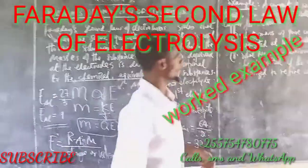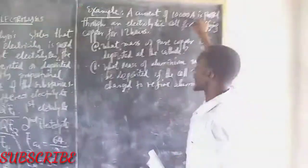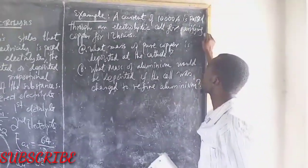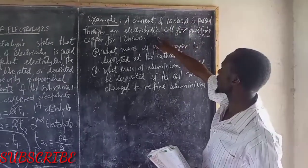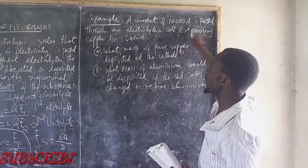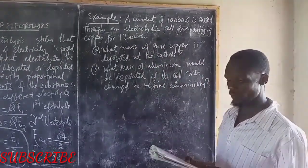Let us see an example here. A current of 10,000 Ampere is passed through an electrolytic cell for purifying copper for 12 hours.